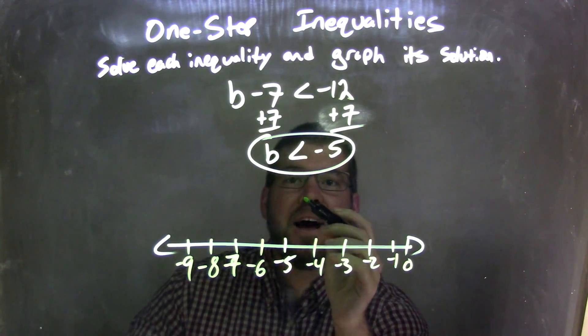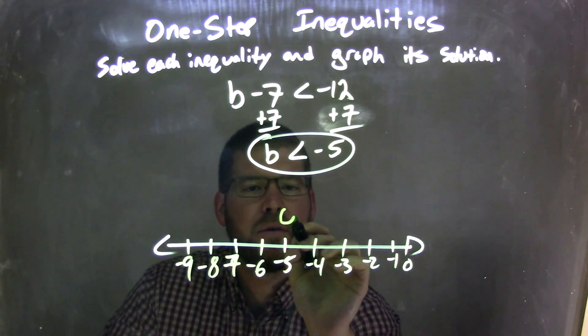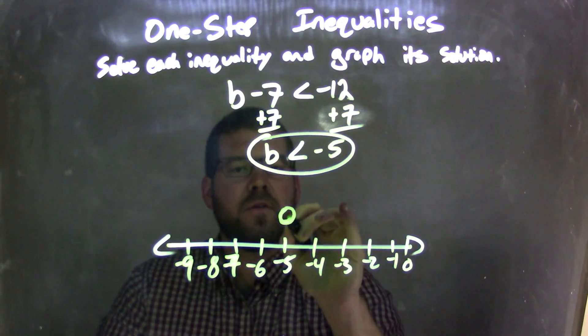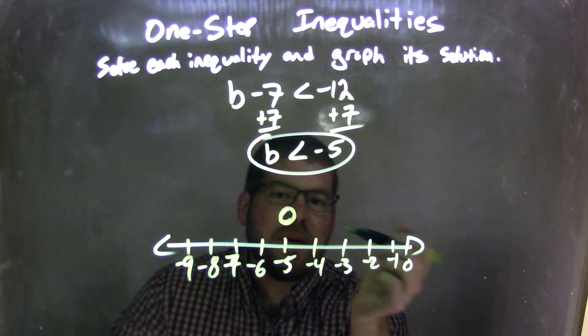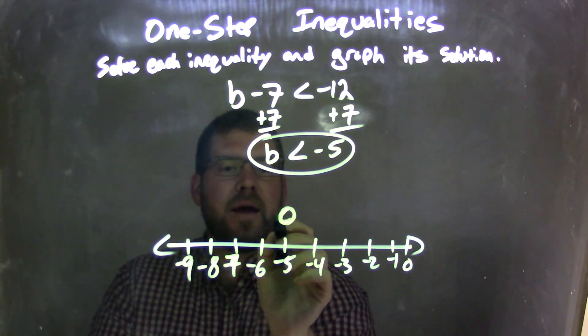So b is less than negative 5. Put an open circle there, less than negative 5. And I'm going to shade it to the left, so I'm going to draw my arrow to the left here.